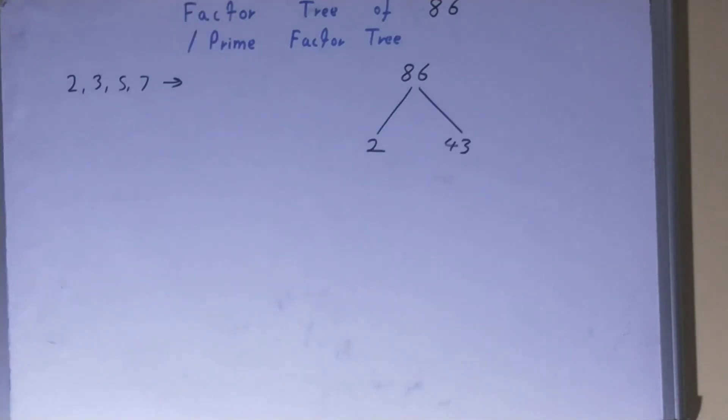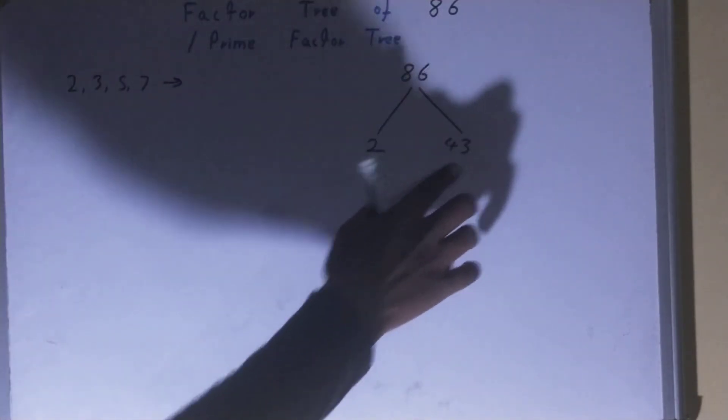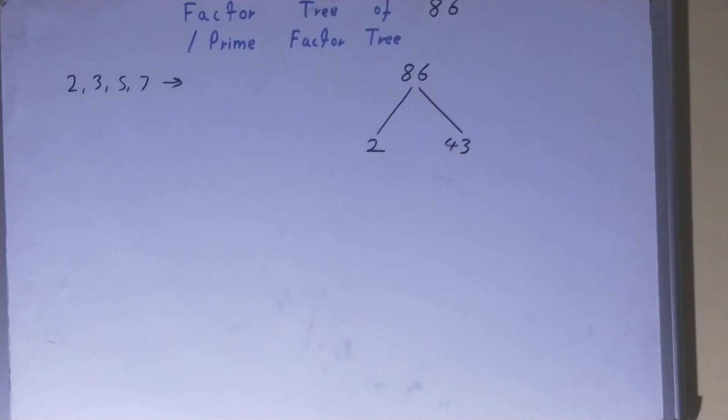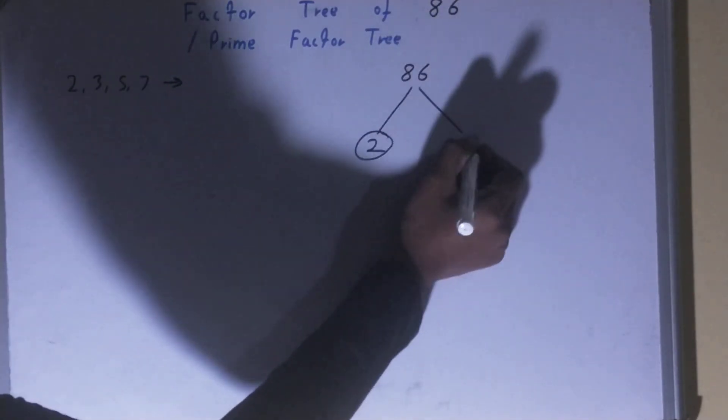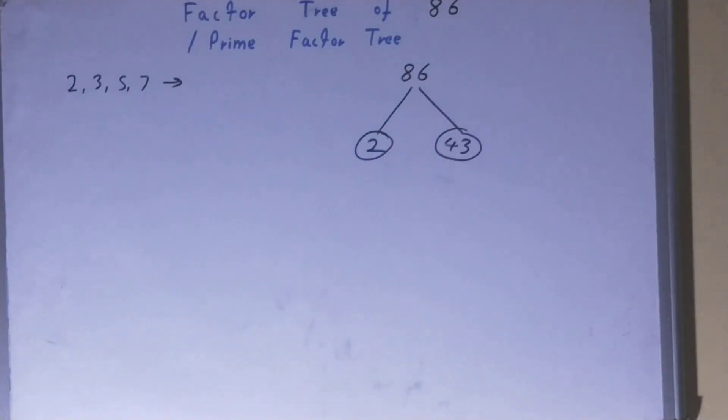Now do we need to factorize this 43 further on? No, because 43 is a prime number and not a composite number. So your work is done over here. The only thing you need to do is circle the terminating nodes or the ending nodes, and that will be the required factor tree.